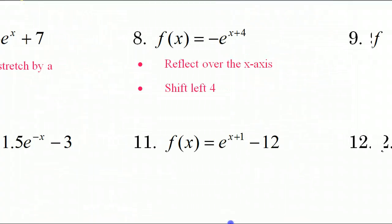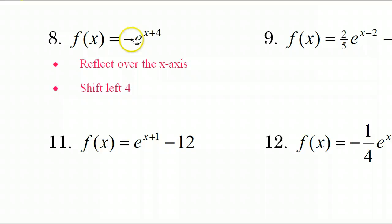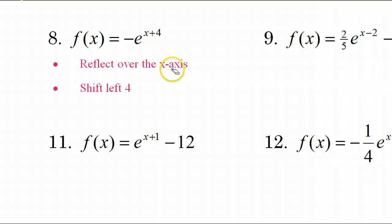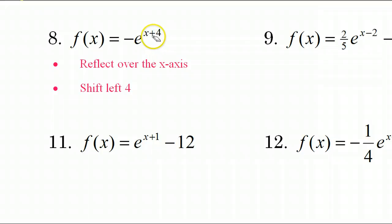Looking at number 8, we have two transformations again. We have this negative sign and then we have the plus 4 in the exponent. A negative in the front is going to cause a reflection over the x-axis. And the other transformation — in the exponent, these are left-right shifts — so positive 4 will actually send us to the left 4. So those would be your two transformations for number 8.